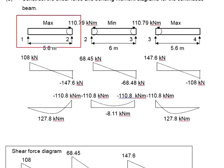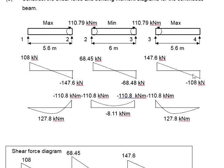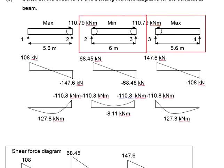Based on the free-body diagram developed here, we use the principles of static equilibrium to find the reactions at 0.1 and 0.2. The reaction at 0.1 is equal to the vertical shear at 0.1, which is 108 kN. As for the reaction at 0.2, it is 147.6 kN. You will do the same for the middle span and the end span.